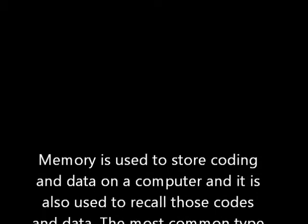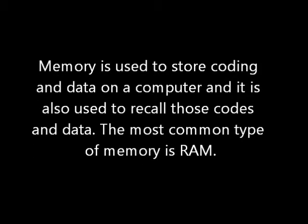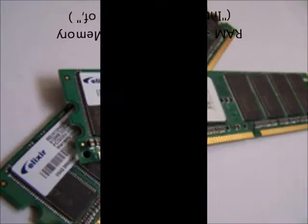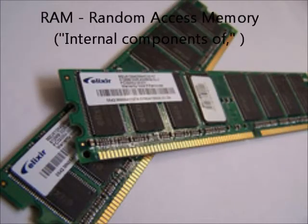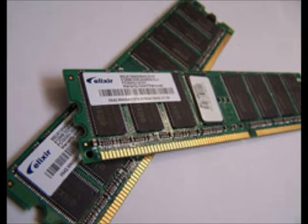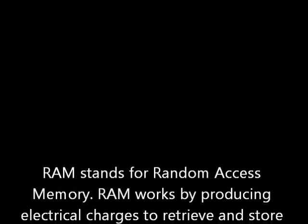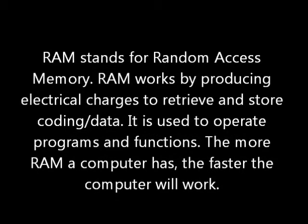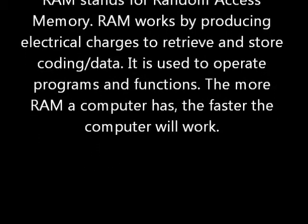Memory is used to store coding and data on a computer. The most common type of memory is RAM, which stands for Random Access Memory. RAM works by producing electrical charges to retrieve and store coding or data. It is used to operate programs and functions. The more RAM a computer has, the faster the computer will work.